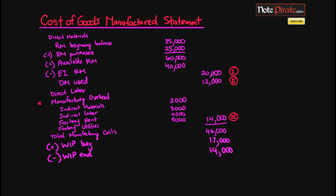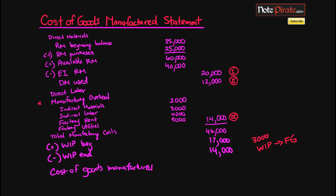These costs represent the costs of manufactured units. With beginning work in process of $17,000 and ending of $14,000, we've moved $3,000 of work in process to finished goods, so those costs get applied to cost of goods manufactured. Adding that $3,000 onto the $46,000 total manufacturing costs gives us $49,000 for our cost of goods manufactured.